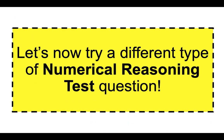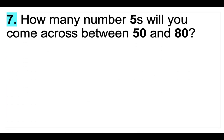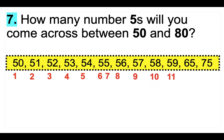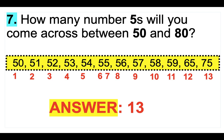Now this next one seems really easy, but it's not. How many number fives will you come across between 50 and 80? You might think it's something like 12, but let's think through it carefully. There's one at 50, 51, 52, 53, 54 — but people forget there are two at 55. Then one each at 56, 57, 58, 59, and one each at 65 and 75. So the answer is 13. Most people get these wrong — don't work through something too quickly until you are fully sure you have the correct answer.